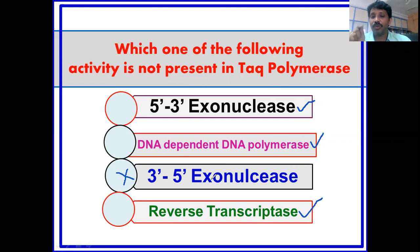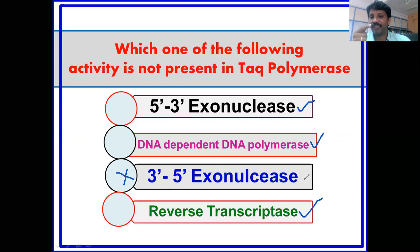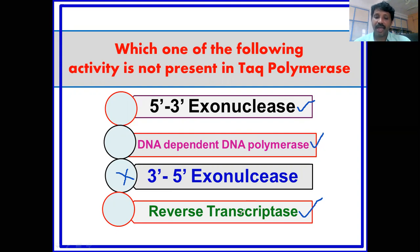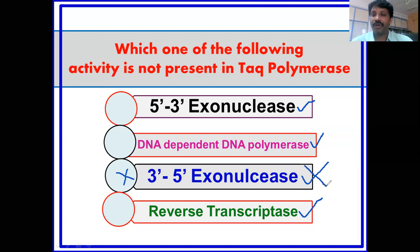Since Taq DNA polymerase does not have three-prime to five-prime exonuclease activity, it tends to add one wrong nucleotide every ten thousand bases — that is, one error per 10⁴ nucleotides. That is the mutation rate of that DNA polymerase. So the answer is: Taq DNA polymerase has five-prime to three-prime exonuclease activity, DNA-dependent DNA polymerase, and reverse transcriptase. The activity which is NOT present is three-prime to five-prime exonuclease activity. Hope you understood — if you like it, please subscribe for regular updates. Thank you, see you soon!